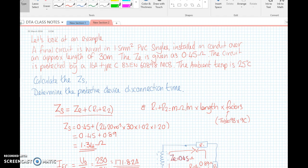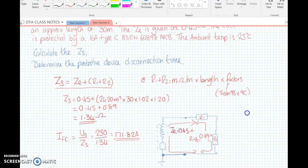Let's look at an example. We've got a final circuit wired in 1.5mm PVC singles in conduit, approximate length 30 meters. The external impedance is 0.45 ohms. The circuit is protected by a 16 amp type C BS EN 60898 circuit breaker, and the ambient temperature is 25 degrees C. We're going to calculate the impedance and determine the protective device disconnection time.